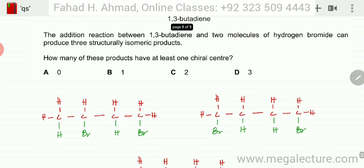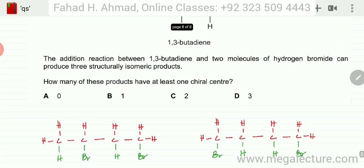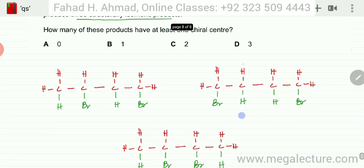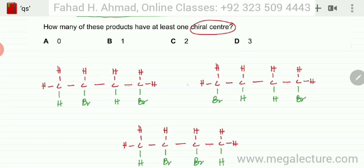Going back and reading the question again: how many of these products have at least one chiral center? The question has already told us there are three structural isomeric products, so we've confirmed that. Now we're going to figure out the chiral carbon atoms. Chiral carbon atoms are those bonded to four different groups, forming mirror images — two enantiomers.